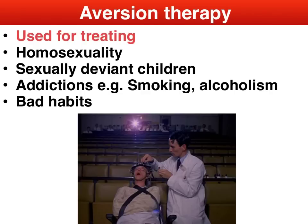Aversion therapy, due to tighter modern ethical constraints, is not as prevalent as it once was, but it's still used. In the past it has been used to treat homosexuality and sexually deviant children, and is still used to deal with addictive behaviour such as smoking, alcoholism, gambling, violence, and bad habits such as nail-biting.